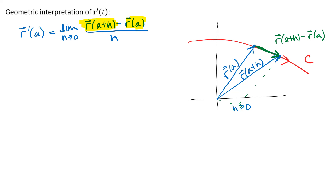So r(a + h) minus r(a) is that difference vector. When I divide through by h — or equivalently multiply by 1/h — that just gives me a scalar multiple of the same vector. Depending on how big or small h is, the vector might be longer or shorter but points in the same direction. If h is positive and very small, dividing by it is like multiplying by a large number, giving me a longer vector — that purple vector r(a + h) minus r(a) all over h.